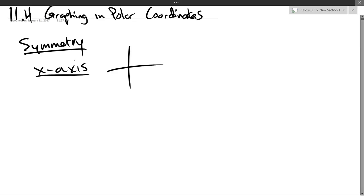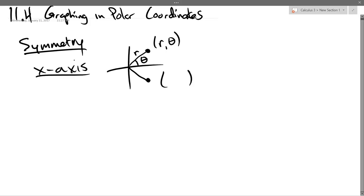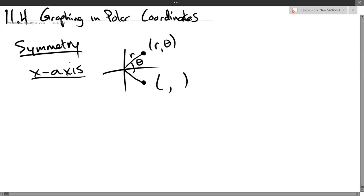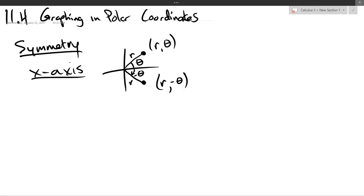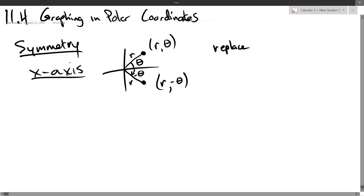X-axis symmetry: you have a point above the x-axis. If you have x-axis symmetry, you get a similar point just below the x-axis. We have coordinates (r, θ). One way to write the coordinates of the point on the opposite side of the x-axis is (r, −θ) — spin the other way. So that angle down there is negative theta, using the same r. The test: replace θ by −θ.